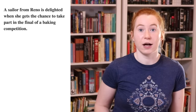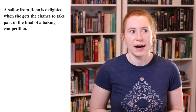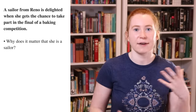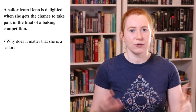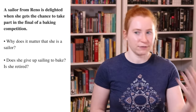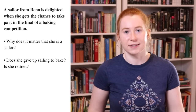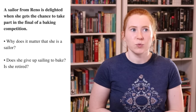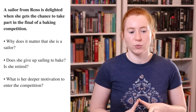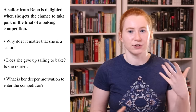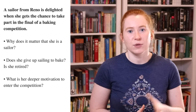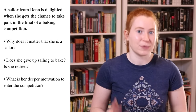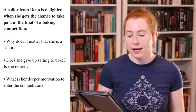The first sentence is: a sailor from Reno is delighted when she gets the chance to take part in the final of a baking competition. We'd want to figure out why does it matter that she was a sailor, what does that have to do with her baking, and how are these two things connected? Does she give up sailing? Does she retire? And secondly, what is the deeper reason that she wants to bake — is there some underlying motive, and how can we use that to help build up the character arc?